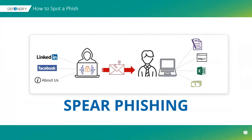They're also performing spear phishing — sending emails to specific, well-researched targets while purporting to be a trusted sender. The aim is to infect devices with malware or convince targets to hand over information or money. Whaling is another type that targets executive-level employees, often using account warnings, because gaining credentials from the top gives attackers access to a lot more.